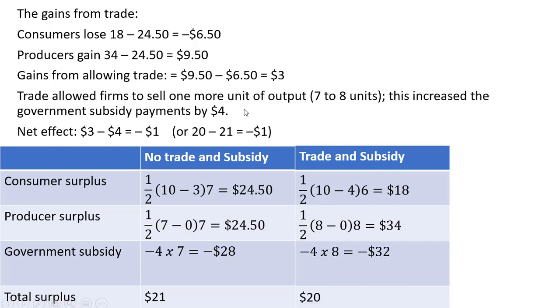Trade allowed the firms to sell one more unit of output. Output went up from seven to eight units. This increased the government subsidy payments by exactly $4, subsidizing one more unit at $4. And so the net effect here is the gains from trade of $3 are being swamped by the losses of the subsidy. So the net effect here is it reduces surplus by $1. Or otherwise, we could just look at the effect of total surplus. It falls here by $1, 21 to 20.